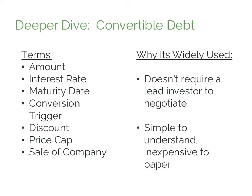Finally, the notes will typically specify what happens in the event the company is sold while the notes are still outstanding. Usually, the note holders will get a multiple of their money — between one and a half and three times — or the ability to convert to common shares at the price cap.